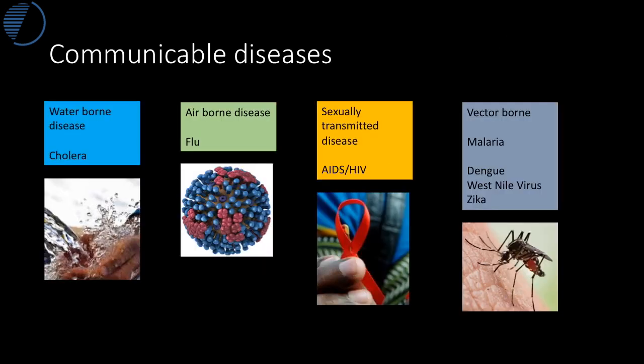Diseases can be described as communicable, and within that family of diseases there are different types. Some diseases are waterborne like cholera, airborne like flu, such as the H1N1 2009 pandemic which affected many countries around the world. We also have the epidemic of AIDS, a sexually transmitted disease. Today we're thinking about malaria, where the mosquito is the vector which carries the disease and is involved in its transmission.